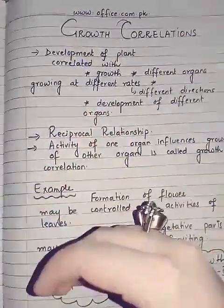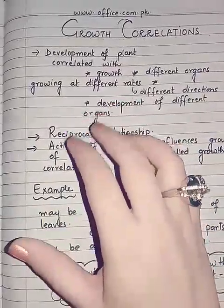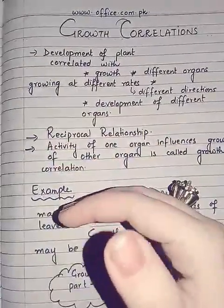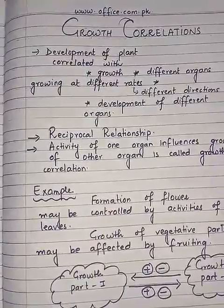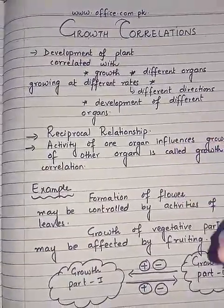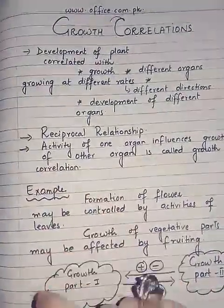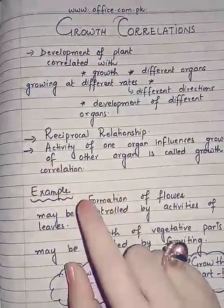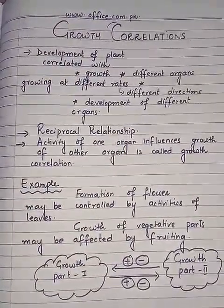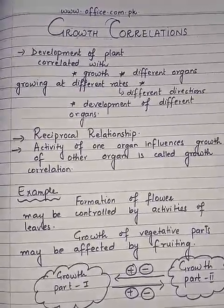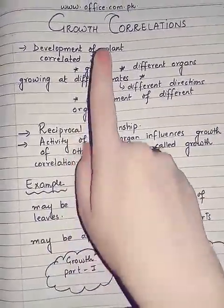For example, in flowering season or in fruiting season, the growth of the other parts of the plant will become slow or retarded so that whole of the nutrition, vitamins, hormones, and other necessary factors needed for growth are supplied in adequate amounts to the growing fruit. As a result, the growth of the vegetative parts will become affected. Similarly, the formation of a flower may be controlled by the activities of the leaf — in flowering season, the growth of the leaf will become slow and retarded.